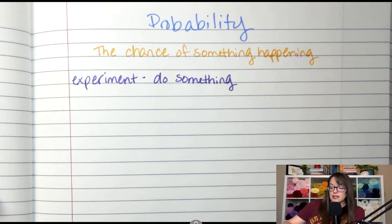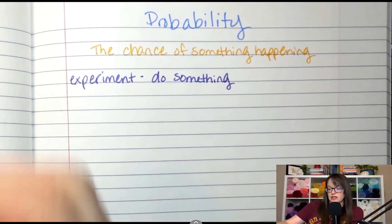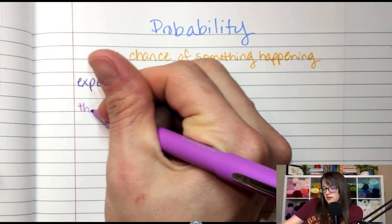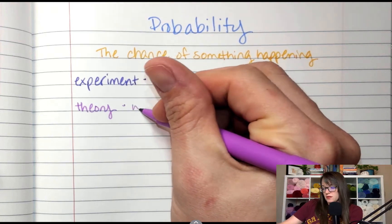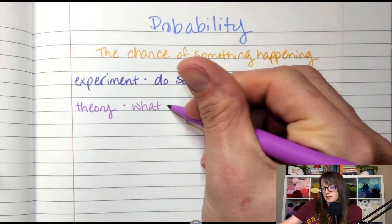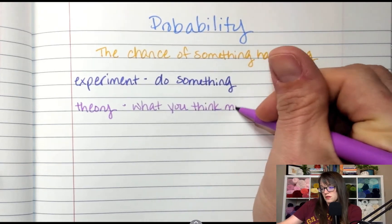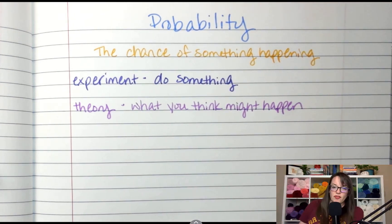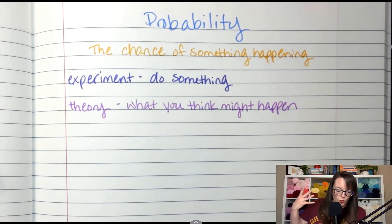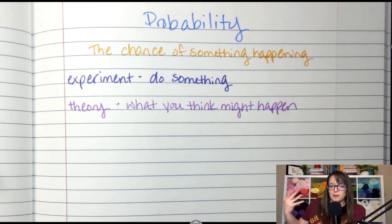Then we've got theory. If you ever hear somebody say theory, like in theory, that is what you think might happen, like a hypothesis. I like to think of theory as like in an ideal world, what would happen? So like in theory, this is what would happen. But in reality, something else happened.